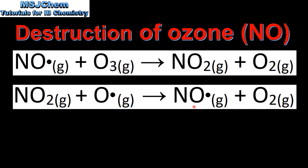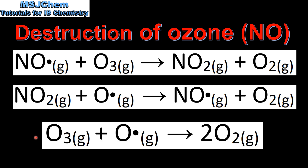Nitrogen monoxide is a catalyst because it is reformed in this reaction, and therefore it can catalyze the destruction of more ozone. In the overall equation for the process, we have ozone reacting with an oxygen free radical to form molecular oxygen.